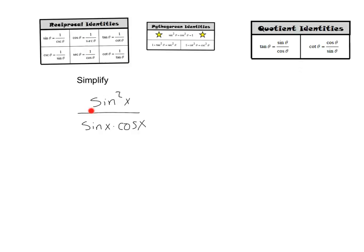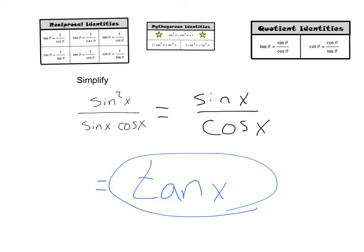Ah, now we're getting somewhere. Here we have a sine squared over a sine. One of my sines could cancel out. That's going to leave me with sine x over cosine x. And since I want to rewrite without a fraction, looking at my quotient identities, I know that sine over cosine equals tangent x. And there we go.